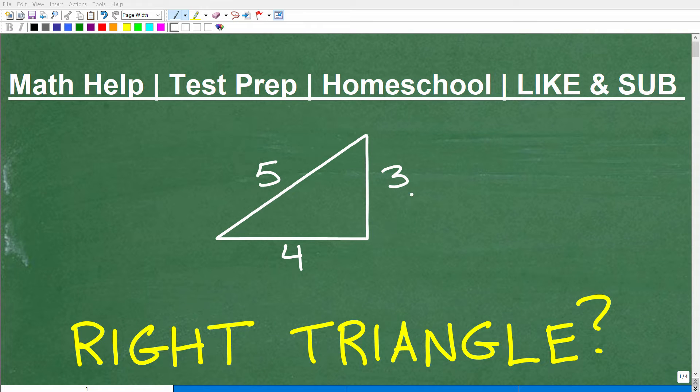Okay, so here we have a triangle with sides 3, 4, and 5. And the question is, is this a right triangle?